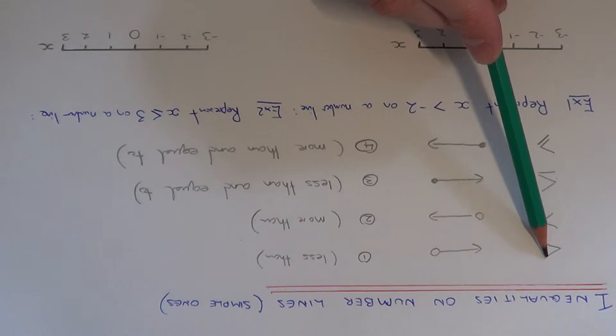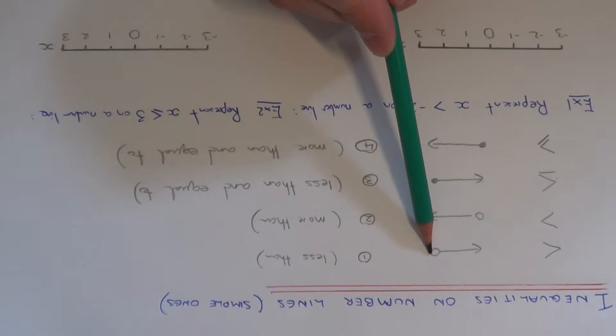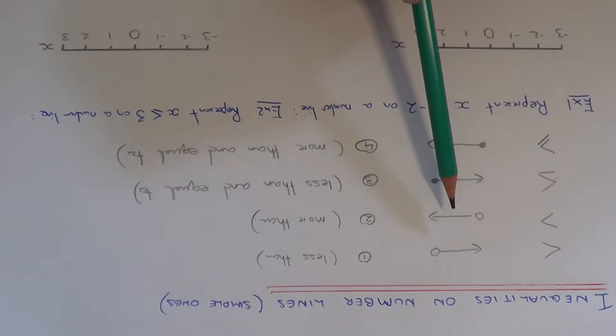The first inequality sign is less than. For less than you do a circle which is not coloured in and an arrow pointing to the left.